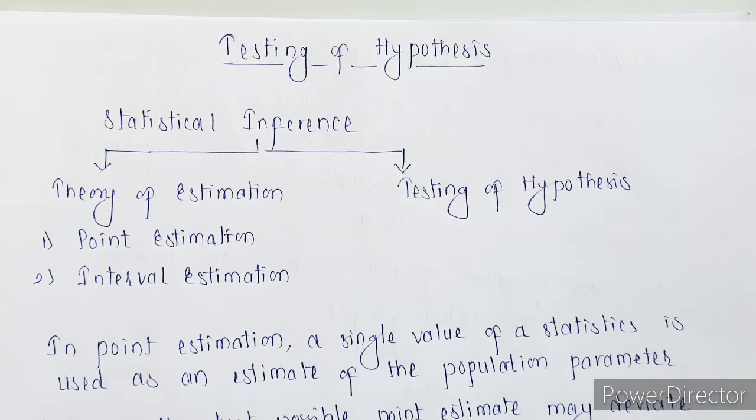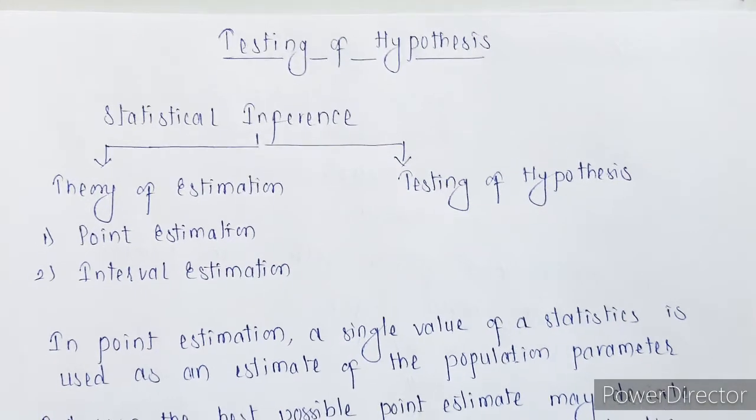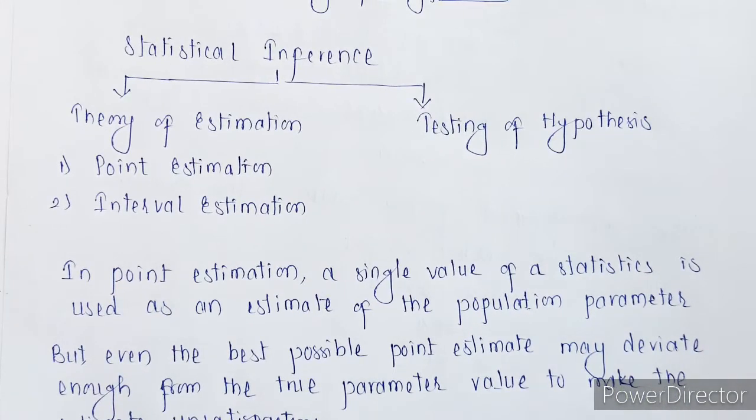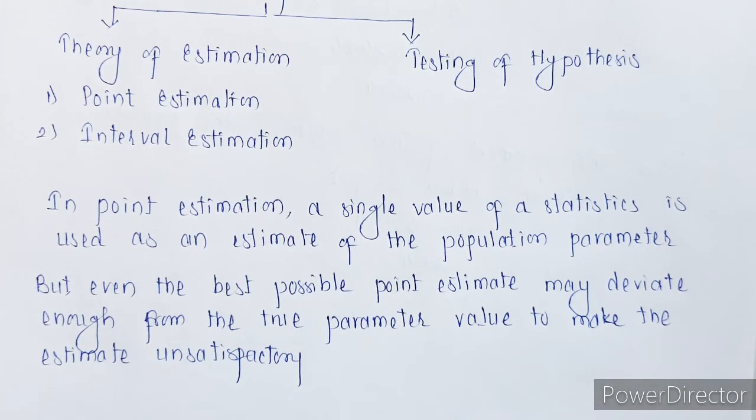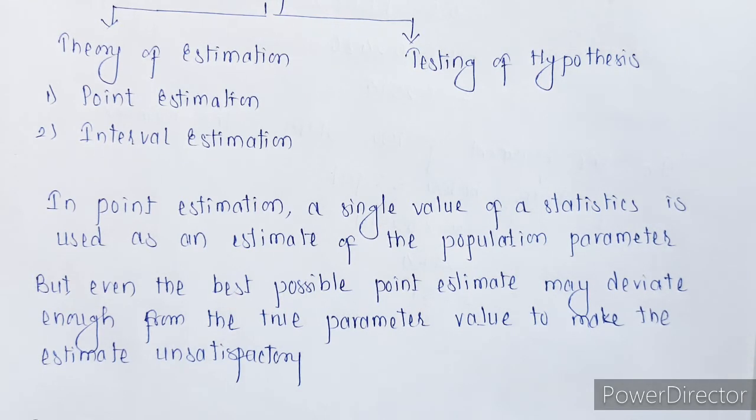But what is point estimation? In point estimation, a single value of a statistic is used as an estimate of the population parameter. So only a single value is used in case of point estimation. What happens is, no matter what best value you are taking, it is not enough. The value whatever we are going to get is not going to be satisfactory.